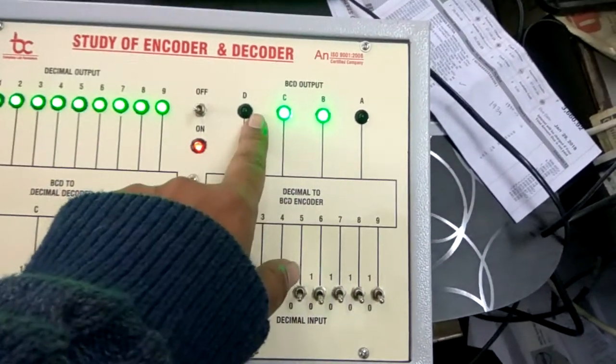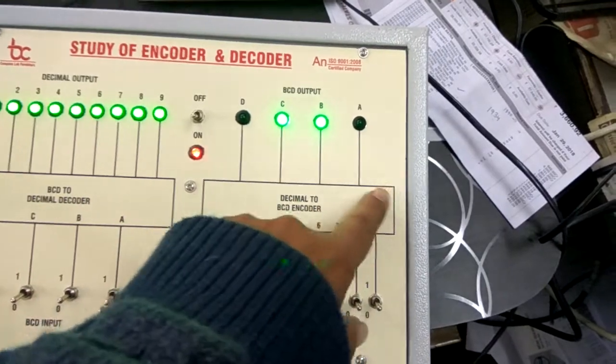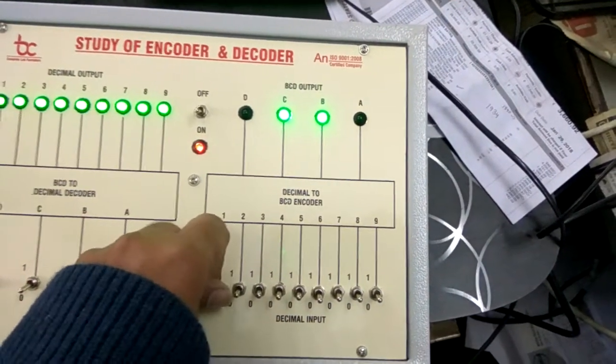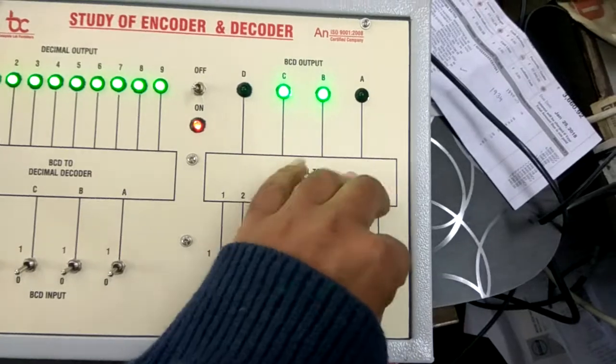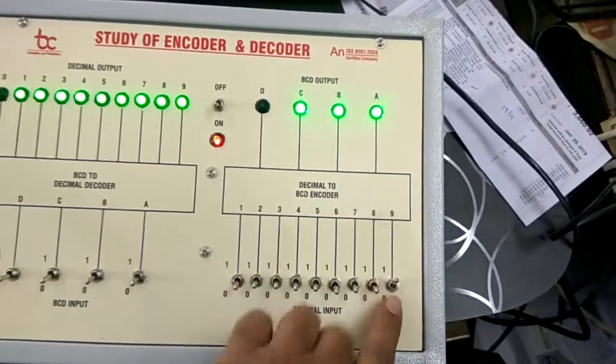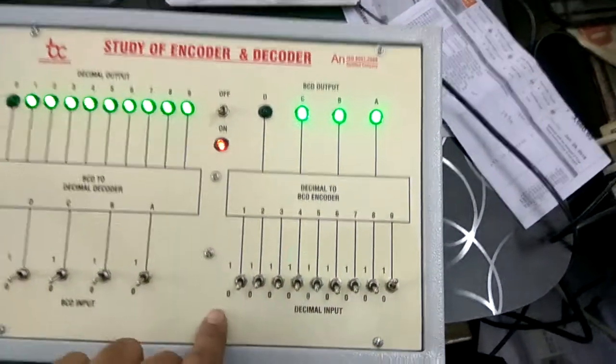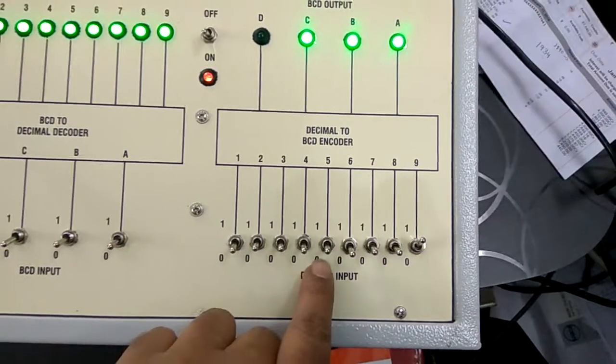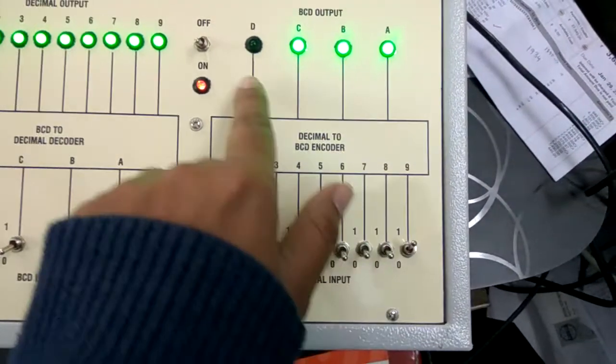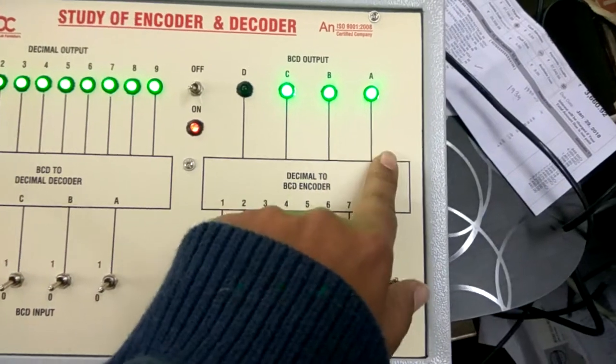In this we are giving decimal. For zero zero zero zero zero zero zero and this one is one, then the output is zero one one one one.